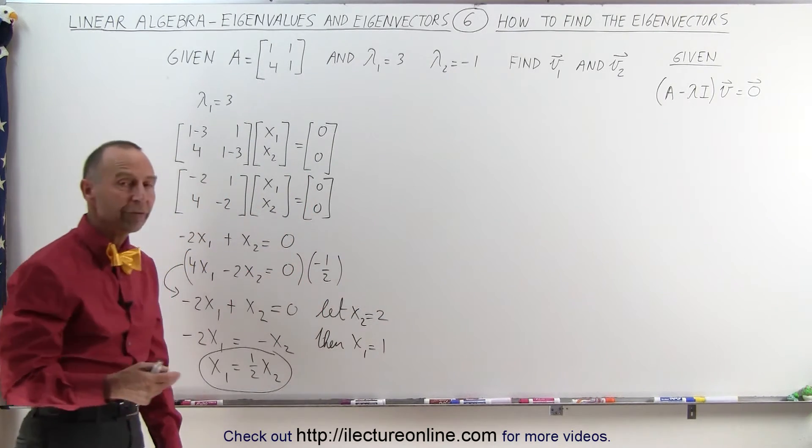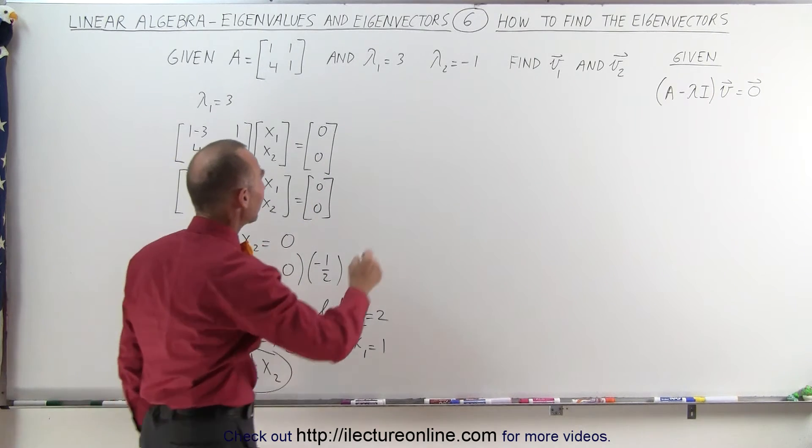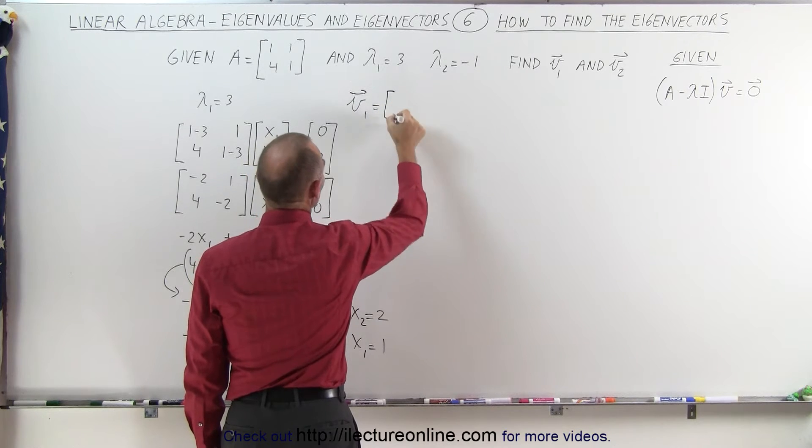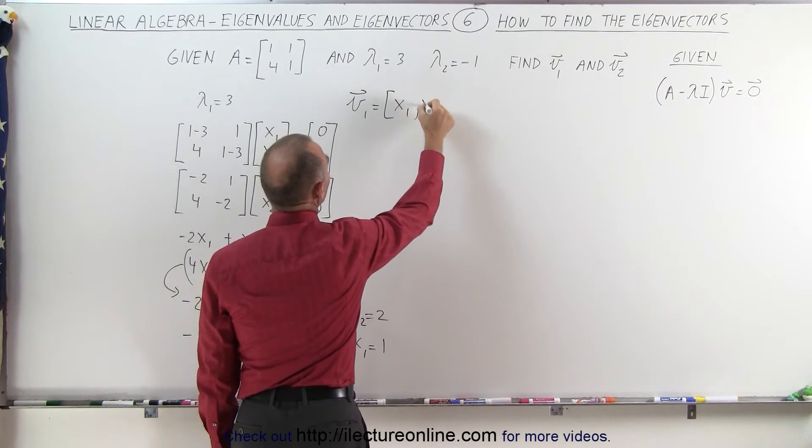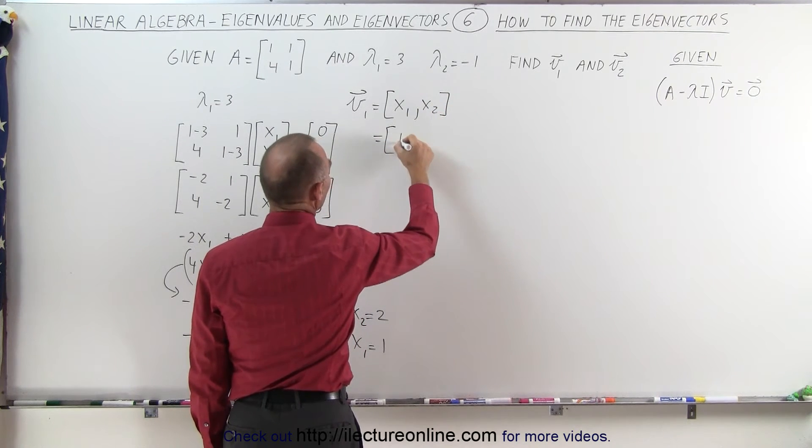And now I have two very nice numbers that allow me to express my first vector v1, so I can now say that v1 can be expressed in terms of x1 and x2, which can then be written as 1 and 2.